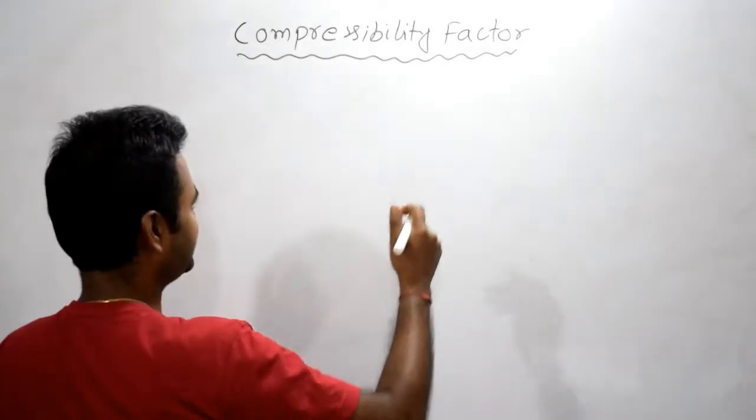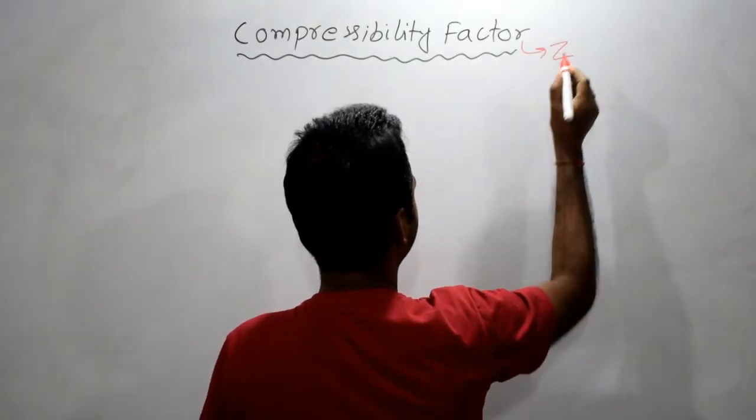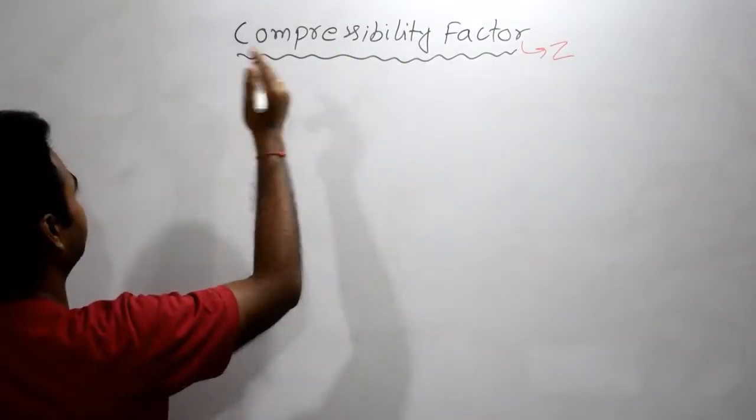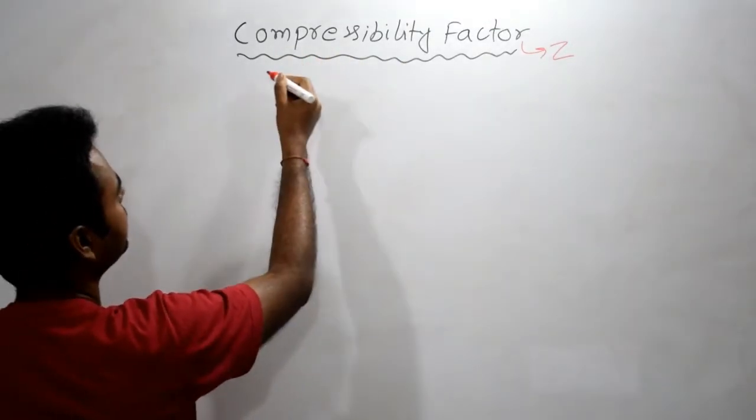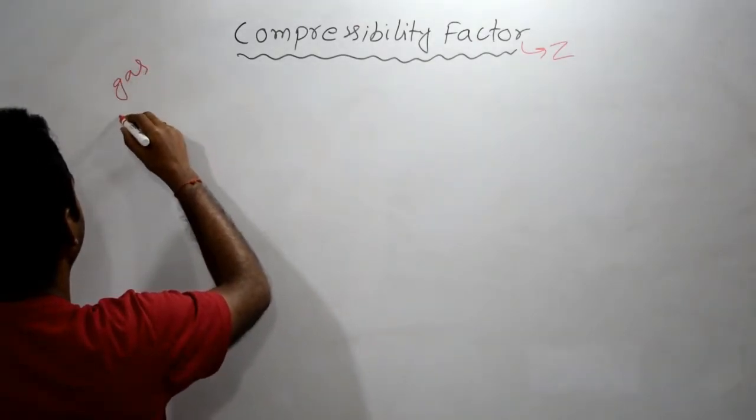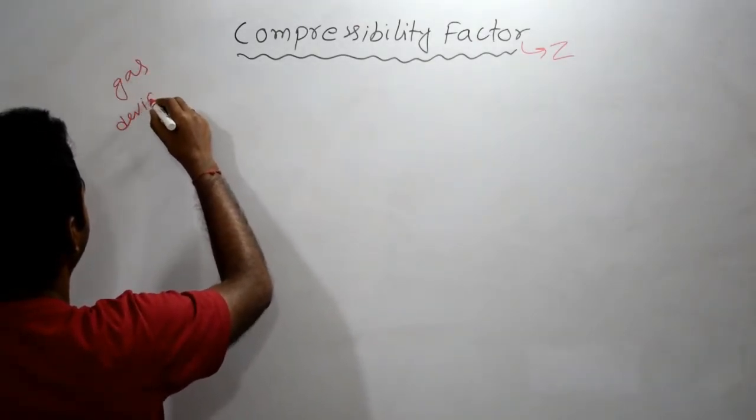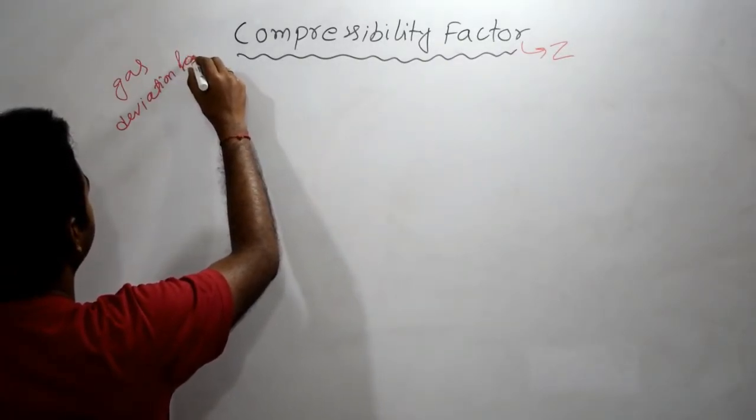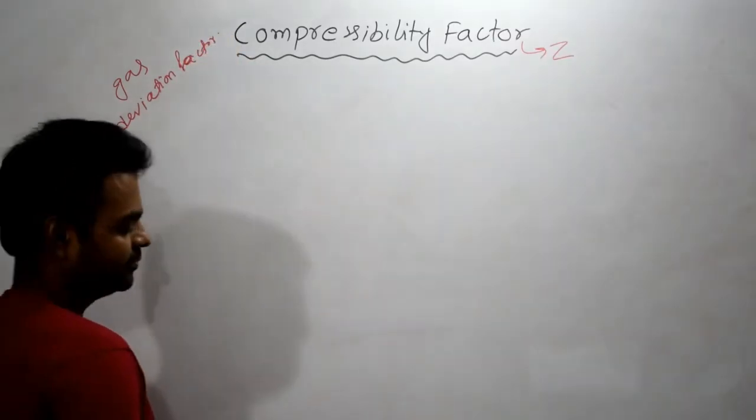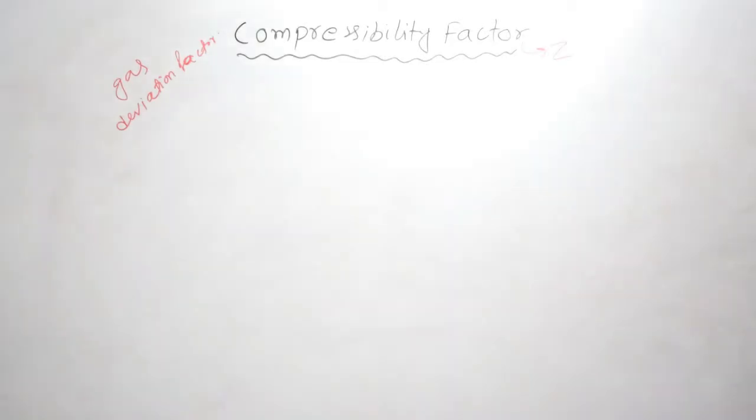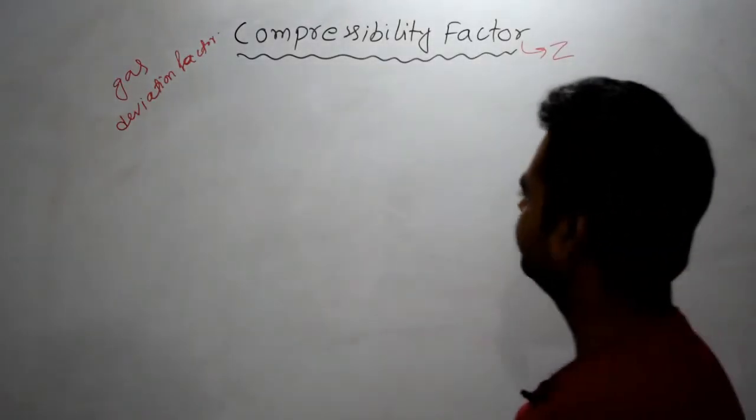Compressibility factor is denoted by Z. And the other names of compressibility factor are gas deviation factor. This is very important for you to understand, gas deviation factor.